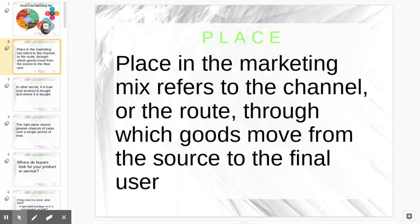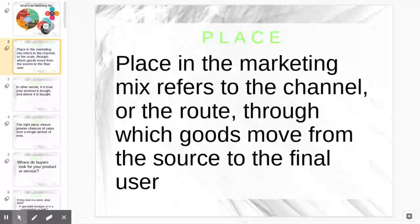Place in the marketing mix refers to the channel or the route through which goods move from the source to the final user. When we talk about source, we're talking about the producer — who's the one making the goods. When we talk about the final user, for most places and most times, that's going to be the consumer, the person that consumes or uses the product.